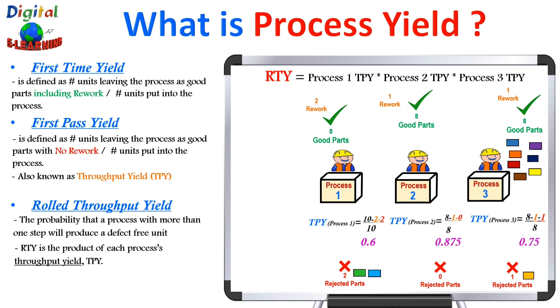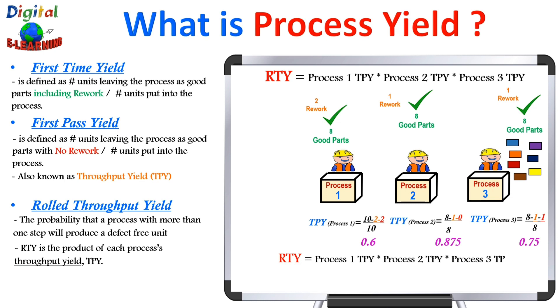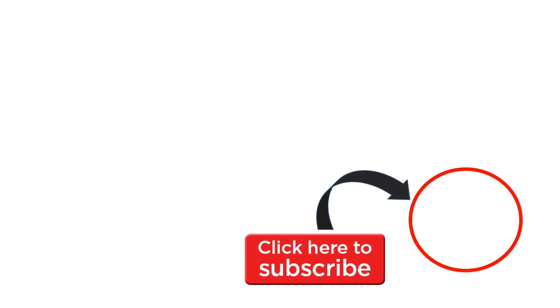Now that we have individually calculated the throughput yield for each process, we calculate the rolled throughput yield by multiplying all three together: 0.6 × 0.875 × 0.75 equals 0.39, or approximately forty percent. So the rolled throughput yield for the entire process is forty percent.